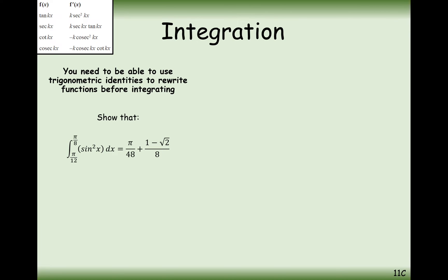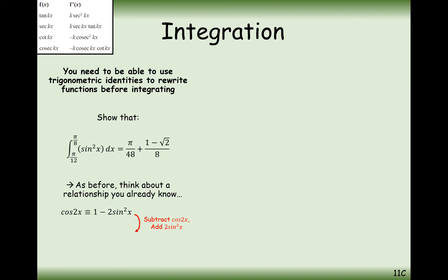The last one is a definite integral. We'll look at the integral first, then think about the boundaries. The integrand is sine squared x, which we can't integrate directly. The identity sin squared plus cos squared equals 1 would require integrating cos squared too — going around in a circle. Instead, we use the cos double angle rule: cos 2x equals 1 minus 2 sine squared x. Rearranging gives 2 sine squared x equals 1 minus cos 2x, and halving gives sine squared x equals one half minus one half cos 2x.